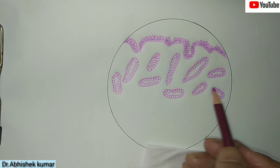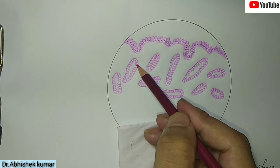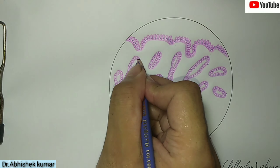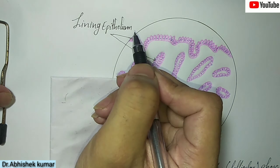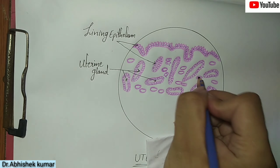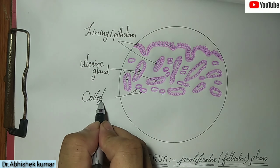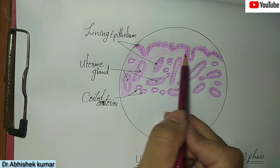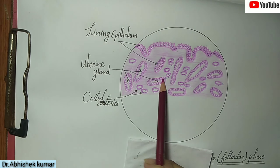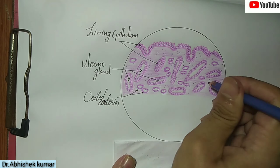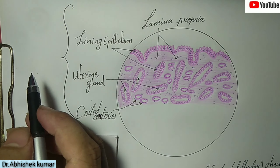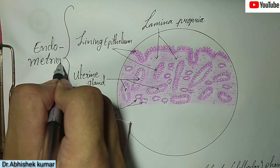We will label all the uterine glands — these form long tubular uterine glands. The lining epithelium extends down into the connective tissue of the lamina propria to form these long tubular uterine glands. These round circle structures are coiled arteries, mainly present in the deeper part of the endometrium. The lamina propria, lining epithelium, uterine glands, and arterioles together make up the endometrium.